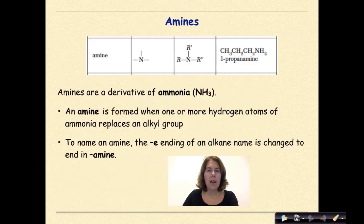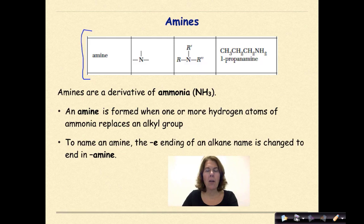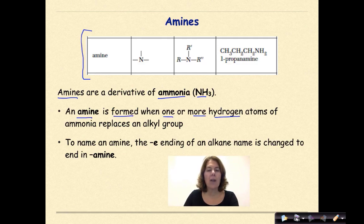Let's begin by talking about amines. And here is the image that is taken from reference table R of your region's reference tables. Amines are a derivative of the molecule ammonia, which we know is NH3. An amine is formed when one or more hydrogen atoms of ammonia is replaced by an alkyl group. Remember, an alkyl group is any type of branch. To name an amine, the E ending of an alkane name is changed to end in amine.